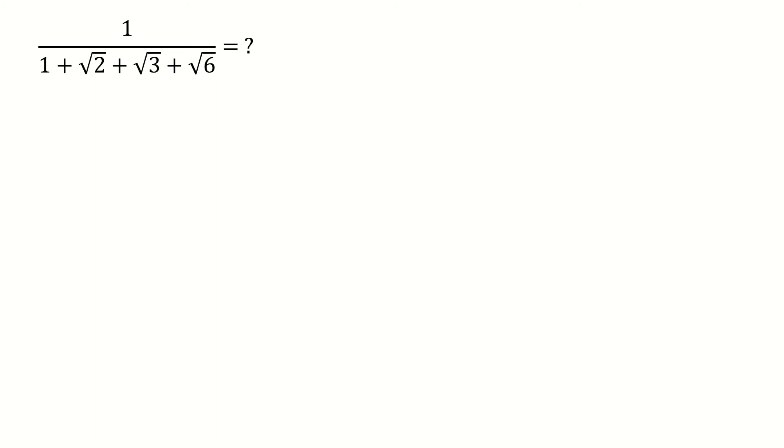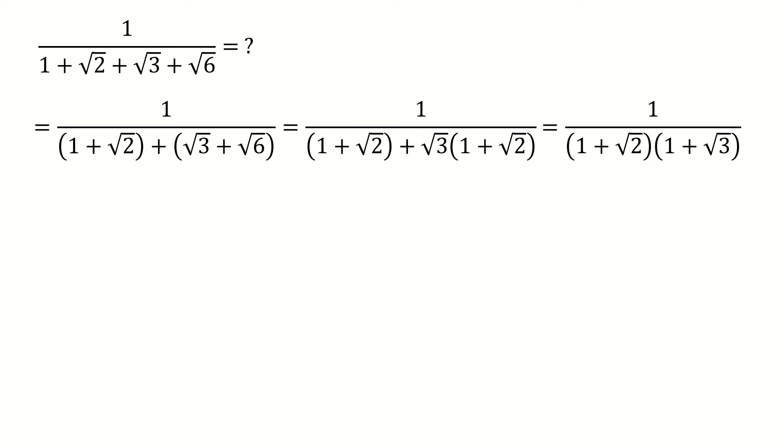Because we know how to deal with the two-term cases, then we just group them into two parts. And for the second part, we can extract the factor square root 3. Now we can factor out the term 1 plus square root 2. Then we got here. So we have done the factorization.